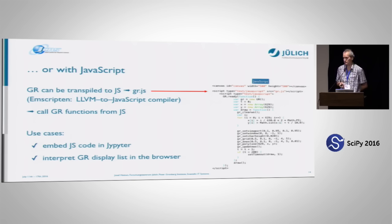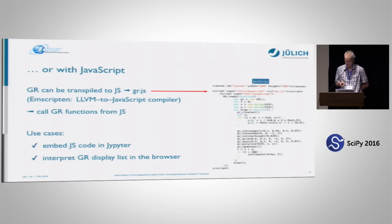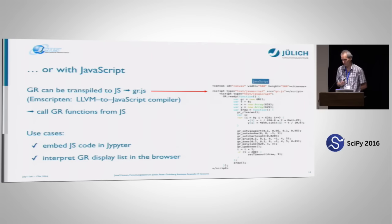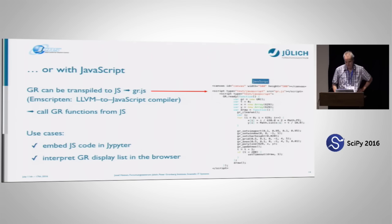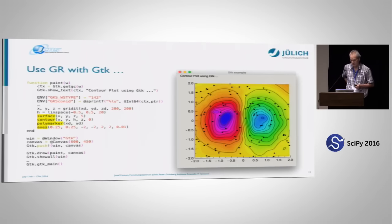We have also transpiled our complete software to JavaScript. This might sound crazy, but it worked. This allows us to use our software in JavaScript code snippets as shown here. You can embed it into a Jupyter notebook as JavaScript code and get even more performance, because JavaScript is much faster than any other software I have seen. Another way would be to simply display a GR display list in the browser, but that's not the primary aim.